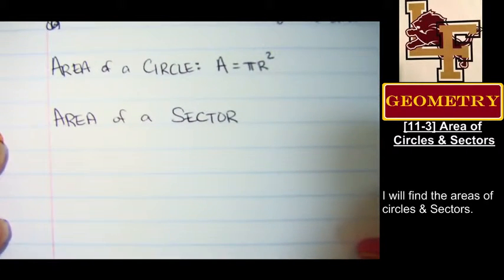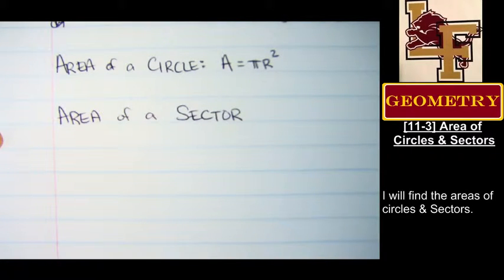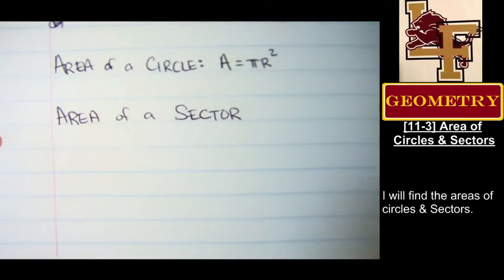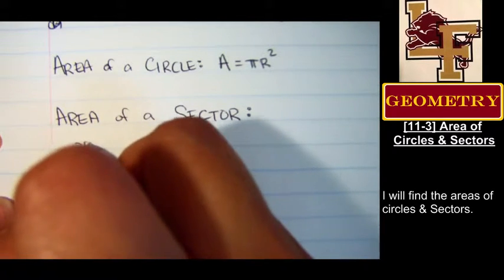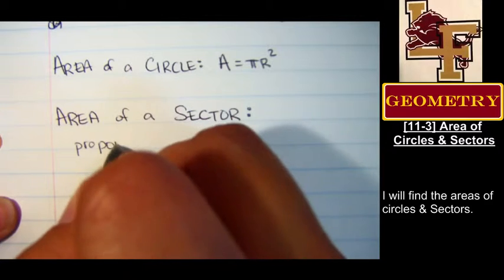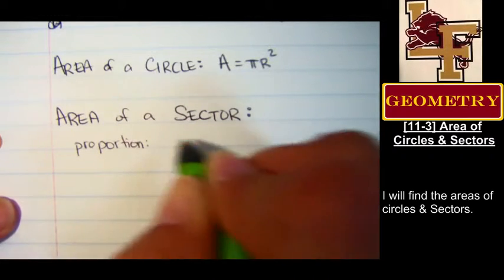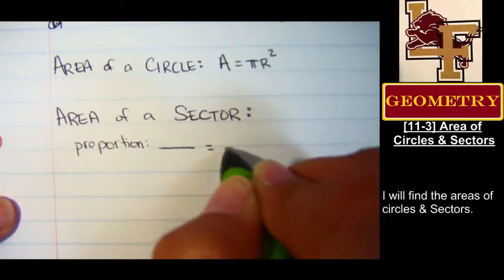Here's our last formula for the day. The formula is area of a sector. Remember that a sector is a piece of a circle. It's a slice of the circle. It's some fraction of the circle. And so I can think of the sector as a proportion.